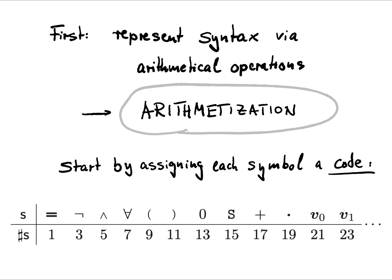So if you first do this with all the syntactical notions, we represent the syntax via arithmetical operations. And this process is generally called arithmetization, or sometimes also Gödelization. We start the whole process by assigning each symbol in our language a code. We'll be interested in working over the natural numbers with the language of arithmetic, but generally this works also for any finite language.